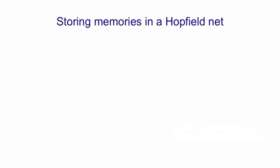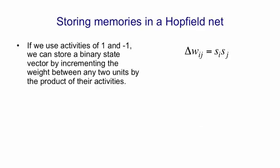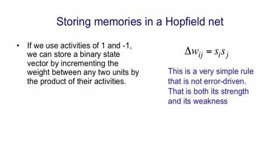The storage rule for memories in a Hopfield Net is very simple. The idea is, if we use activities of 1 and minus 1, that we can store a binary state vector by just incrementing the weights between any two units by the product of their activities. So it's a very simple rule shown on the right. One nice thing about this rule is that you just go through the data once and you're done. So it really is a genuine online rule. That's because it's not error driven. You're not comparing what you would have predicted with what the right answer is, and then making small adjustments. The fact that it's not an error correction rule is both its strength and its weakness. It means it can be online, but as we'll see later, it also means it's not a very efficient way to store things.